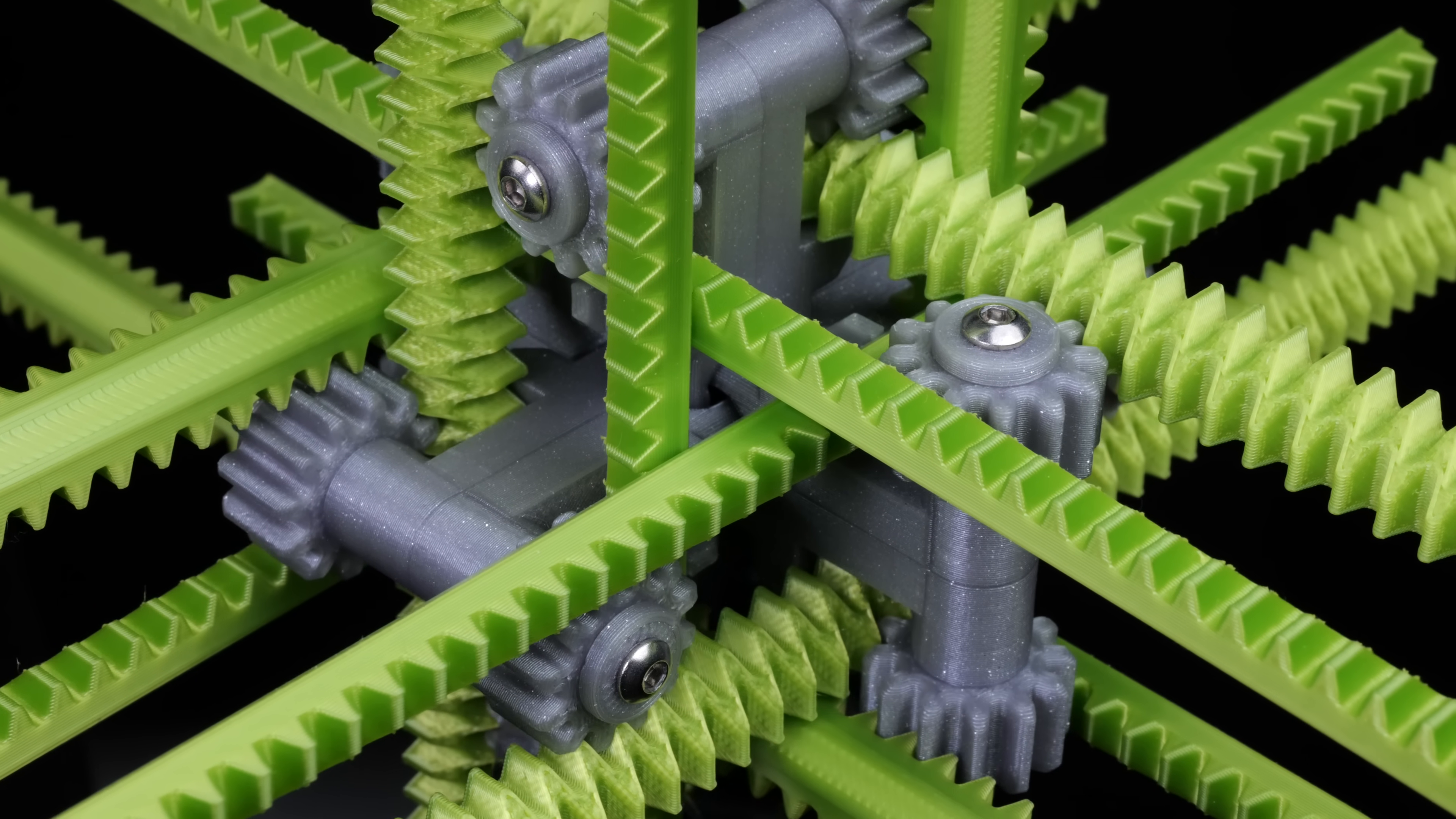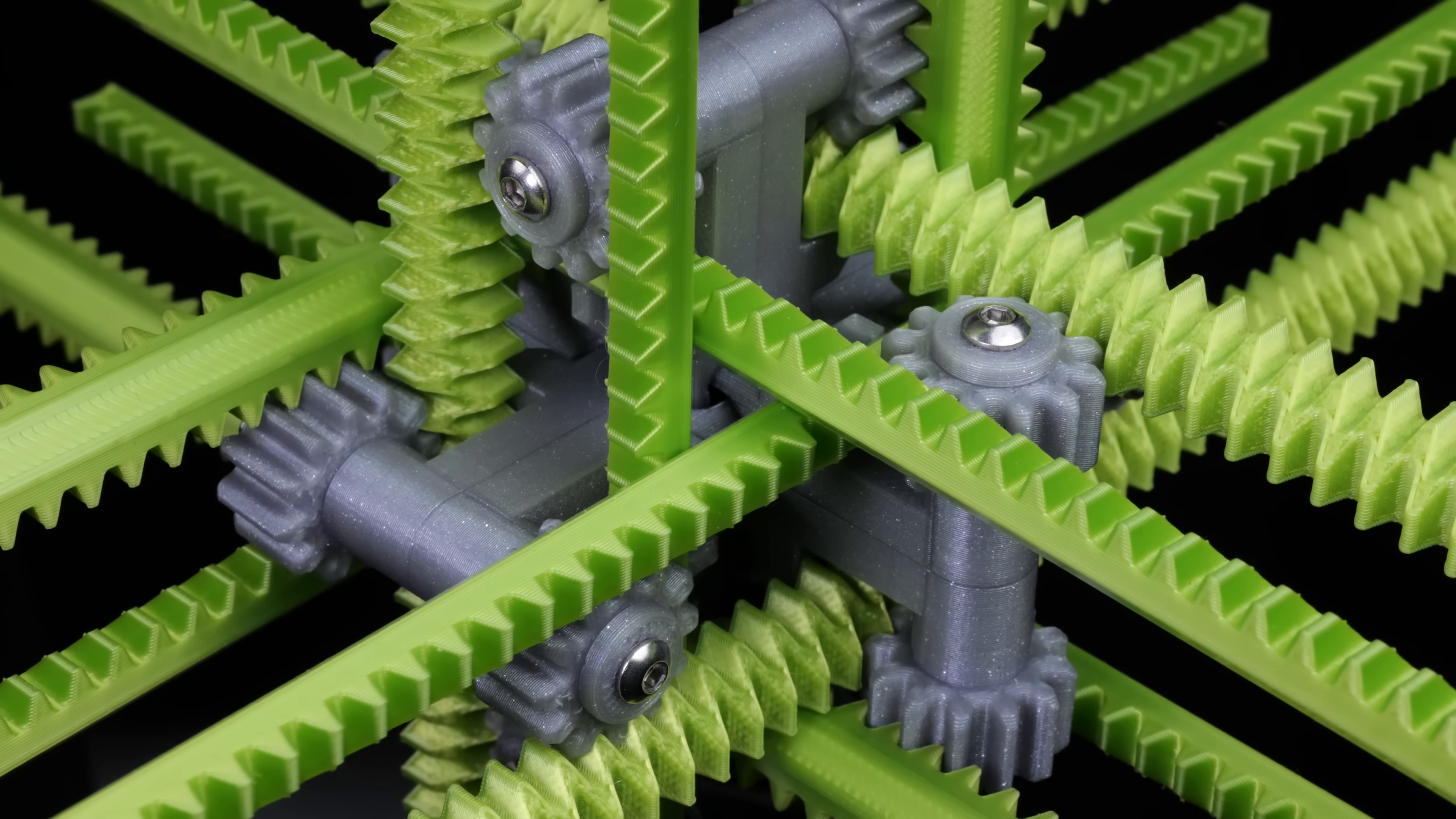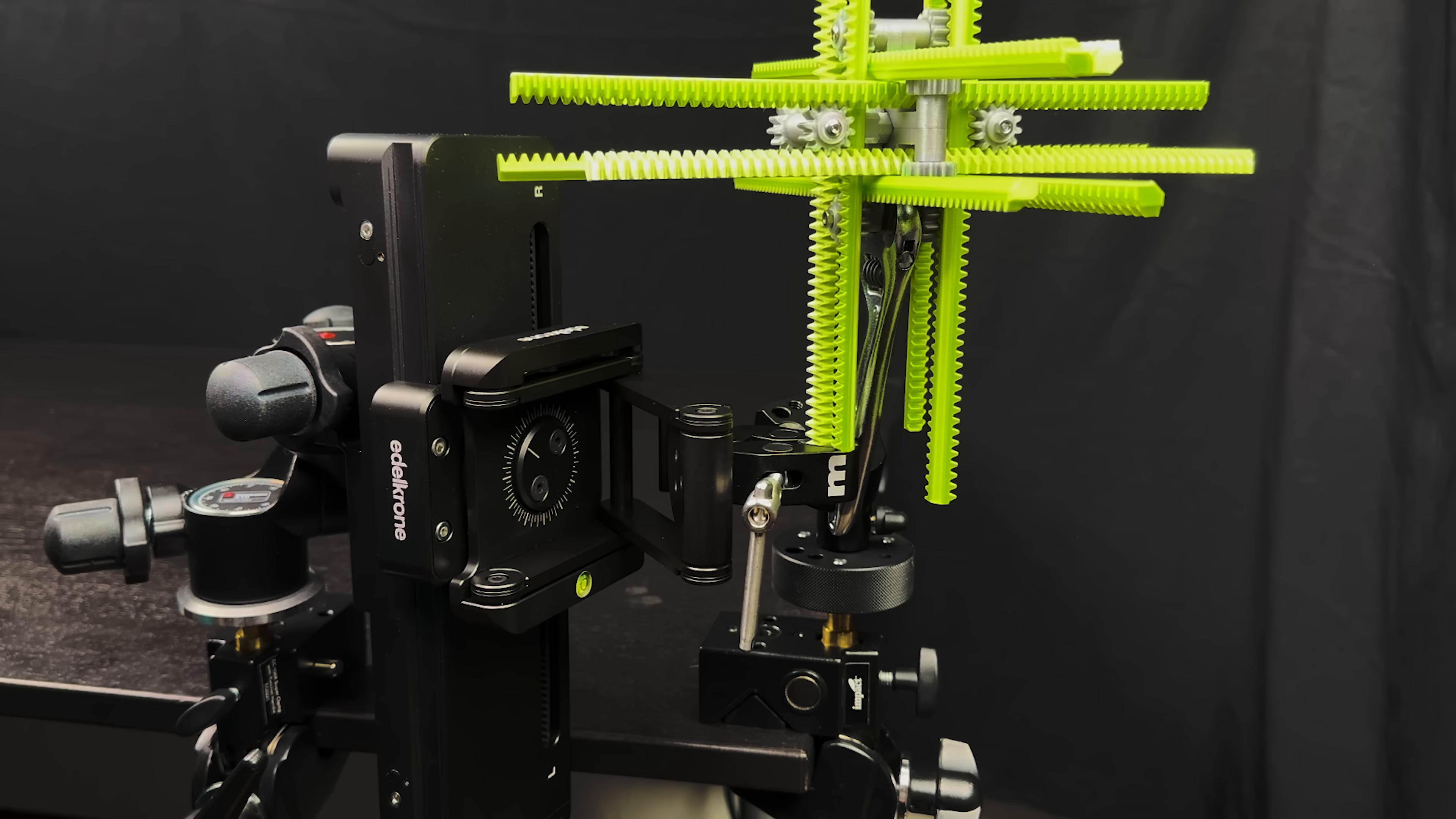Here's a close-up of the core. I'm moving the sticks very slowly so you can see which way all of the gears and racks are moving. Again, this is all powered by moving just one of the racks. Here I've got this motion control slider to move it very slowly in a controlled way.